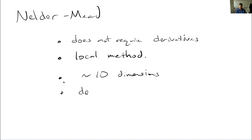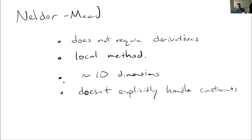Nelder-Mead doesn't explicitly handle constraints, and that's true of many — though not all — gradient-free methods. Many of them have no mechanism like the Lagrangian and Lagrange multipliers we have with gradients. So we have to do something else, often a penalty function, creating an unconstrained problem by forming some sort of penalty. There are some methods that have ways to deal with constraints, but many do not.